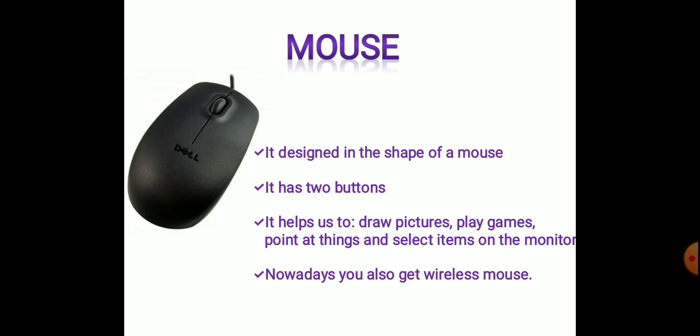Next comes the mouse. Just like a real mouse is small in size and has a tail, a computer mouse is also small in size, looks like a real mouse, and has a wire-like tail that is attached to the CPU. It is designed in the shape of a mouse and has two buttons.